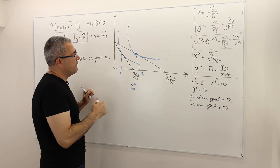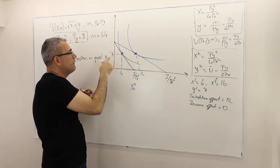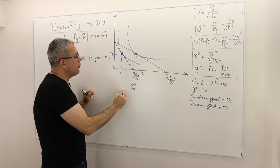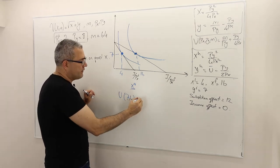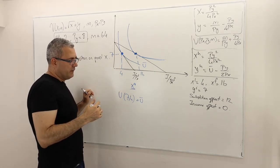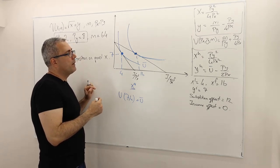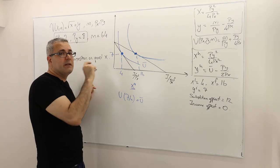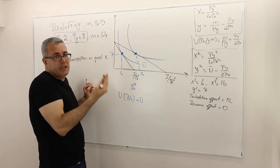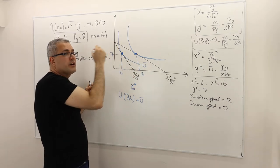Hicks says the following. Look, this was the original point, original consumption bundle, 7 good Y, 4 unit of good X. So let's calculate the utility at that level. Utility 7, 4. And this is my U bar. So what I want to do, I want to calculate the new optimal point. I want to calculate the Hicksian demand for good X and demand for good Y, which minimizes the expenditure, obviously, and achieves the utility exactly U bar.